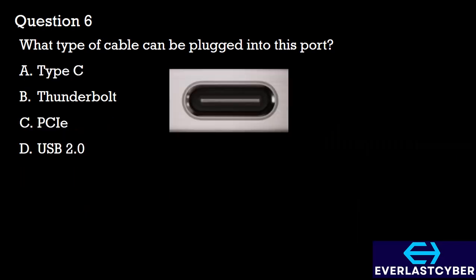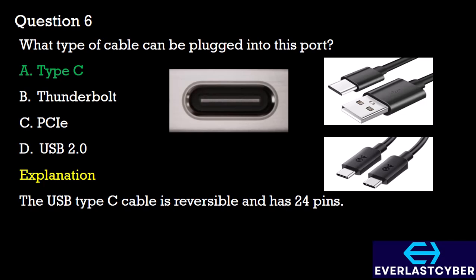Question 6: What type of cable can be plugged into these ports? A. Type-C, B. Thunderbolt, C. PCIe, D. USB 2.0. The answer is Option A, Type-C. This is a typical Type-C port, and the cable is reversible — you can plug it in on any side without checking if it's upright or upside down. It has 24 pins and comes in different standards: some have one end as Type-C and the other as USB, while others have both ends as Type-C. The plugs are usually flat and will work whether inserted right side up or upside down.